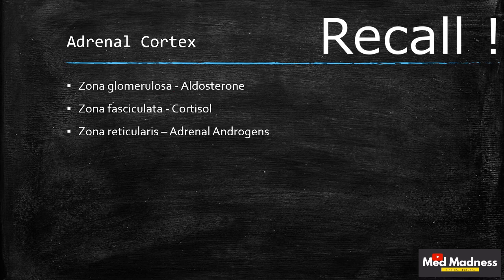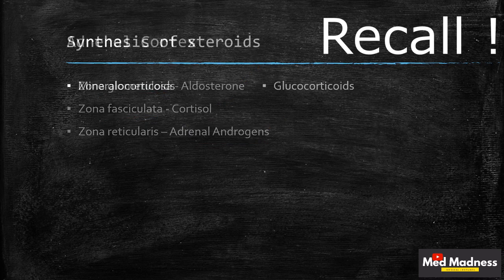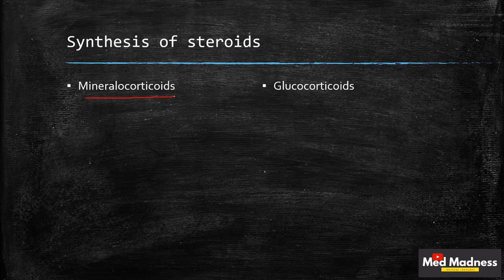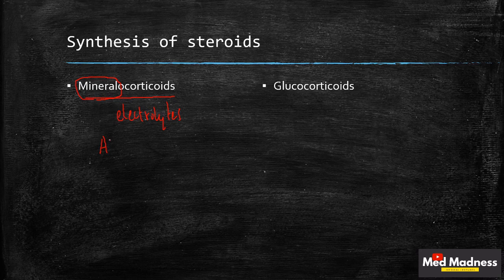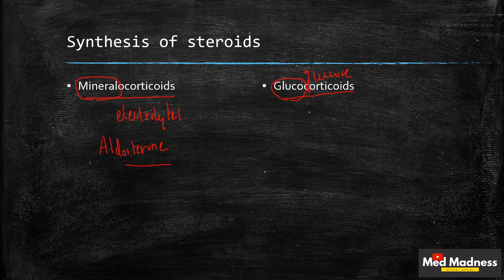Zona glomerulosa secretes aldosterone, zona fasciculata secretes cortisol, and zona reticularis secretes adrenal androgens. Mineralocorticoids — their main action is on minerals, that is electrolytes. The powerful mineralocorticoid is aldosterone. Glucocorticoids — their main action will be on glucose metabolism. The powerful glucocorticoid is cortisol.